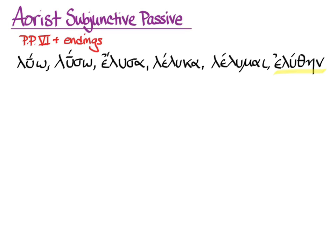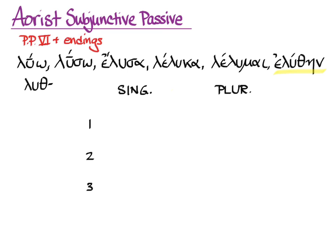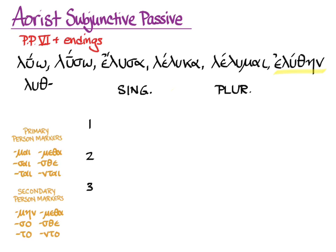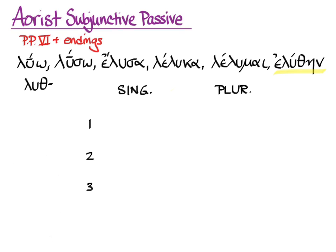So here's our luo, and we'll need the unaugmented stem because we won't be indicative. To get the stem, we take off the -aine and we take off the epsilon augment. Now a place to put our endings — I want to use the passive person markers, but actually I won't need them because everything aorist and passive looks active.